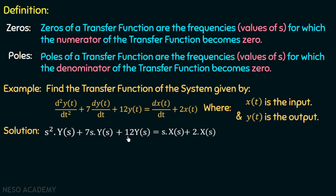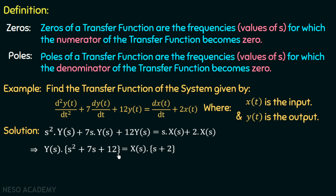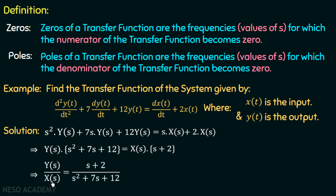Now we have Y(s) common on the left-hand side and X(s) common on the right-hand side. Taking Y(s) common on the left gives Y(s)·(s² + 7s + 12), and taking X(s) common on the right gives X(s)·(s + 2). Transposing X(s) to the left and the factor (s² + 7s + 12) to the right, we get Y(s)/X(s) = (s + 2) / (s² + 7s + 12).